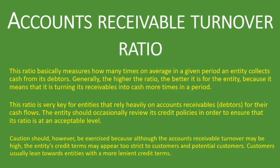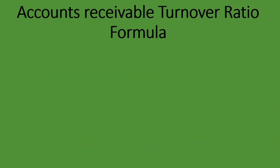Let me show you the formula for the accounts receivable turnover ratio. It's net credit sales divided by average accounts receivable. The numerator is the net credit sales — the sales made on credit, not cash. You're going to expect the money to be paid to you by your debtors or accounts receivable. We're not talking about the entire sales because some sales are made on cash; we're talking only about those made on credit. That is the net credit sales, divided by the average accounts receivable.